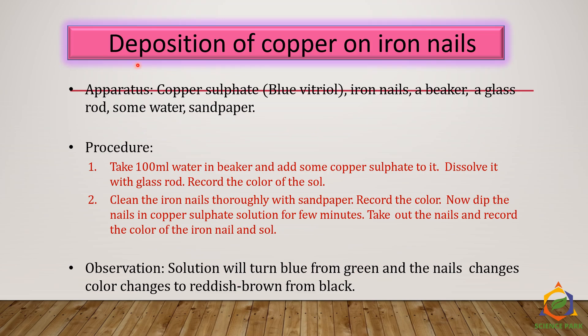Let's see this experiment. If we were at Science Park, I would have shown you this experiment, but I will explain it here and whenever we go to Science Park, we will definitely do it. The aim of the experiment is the deposition of copper on iron nails. This is a classic example of a displacement reaction where copper gets displaced in the place of iron.